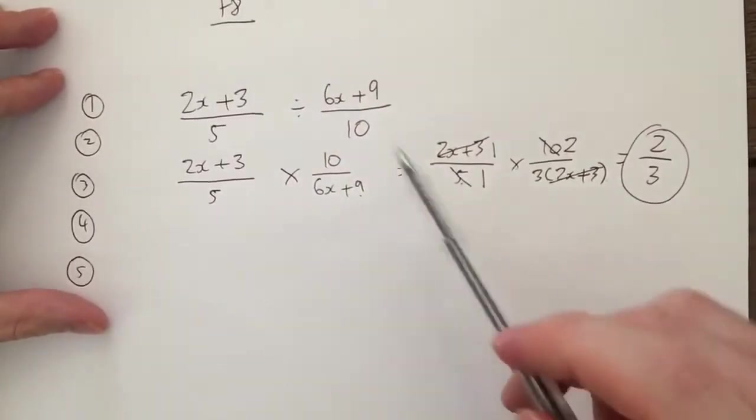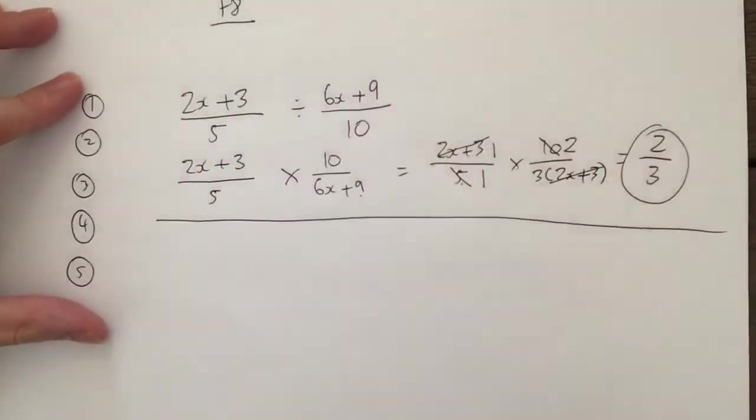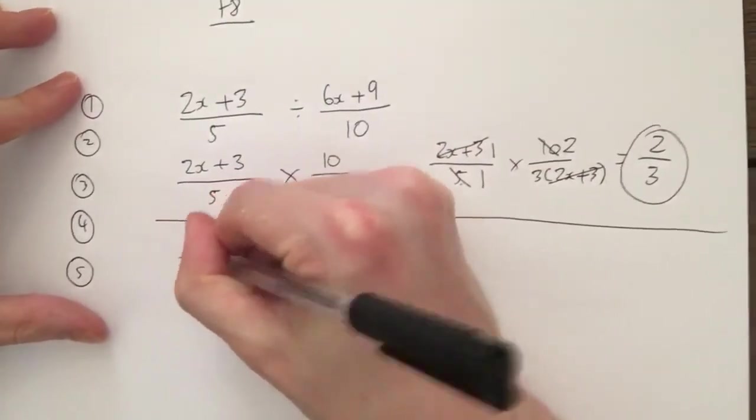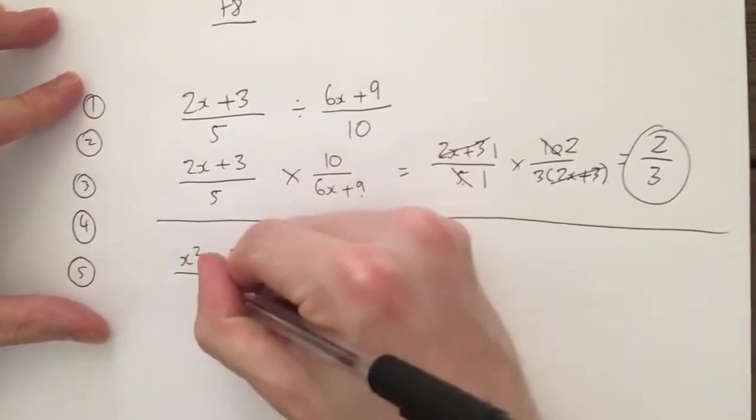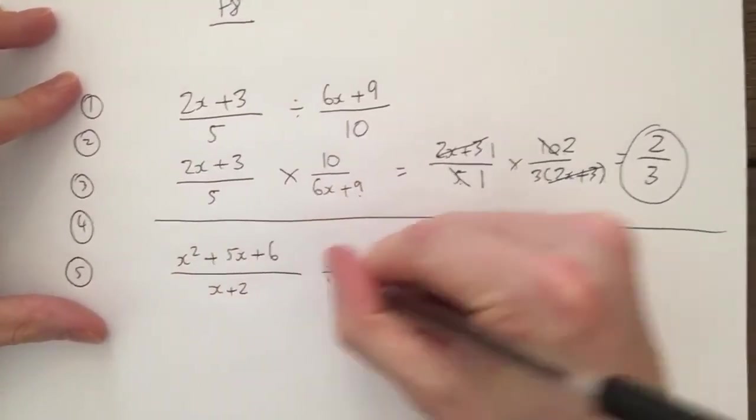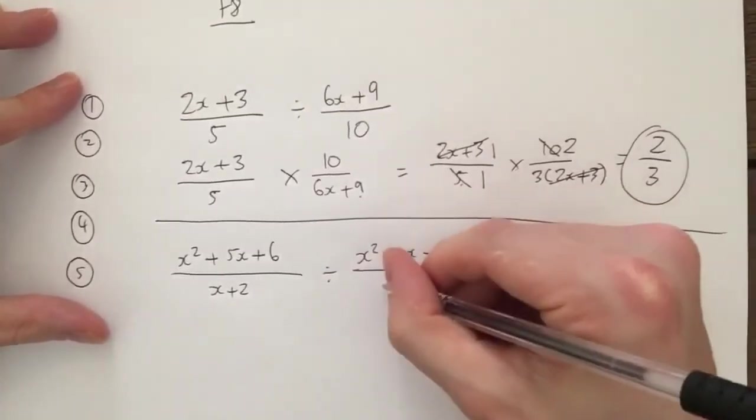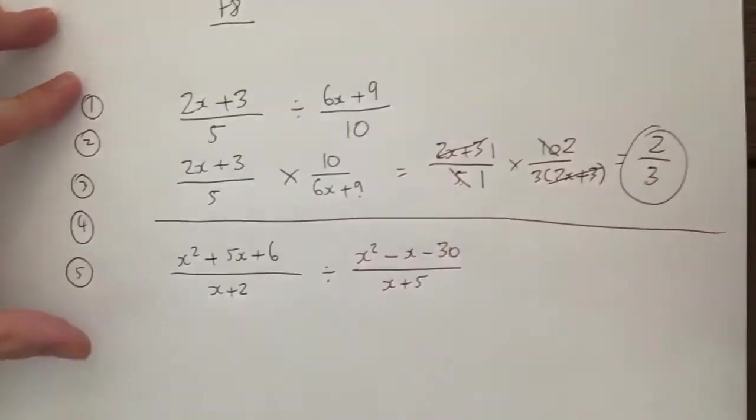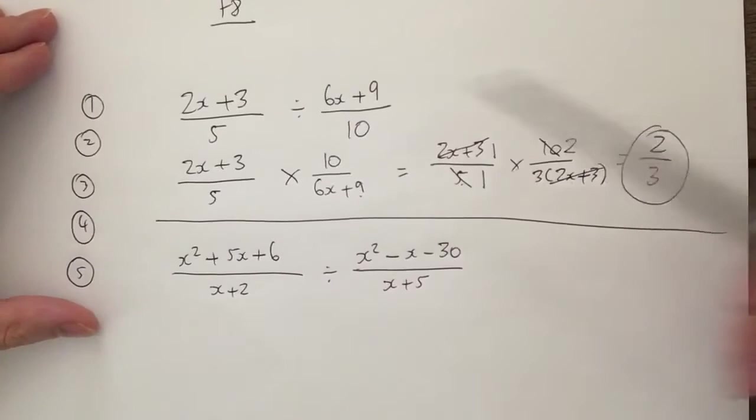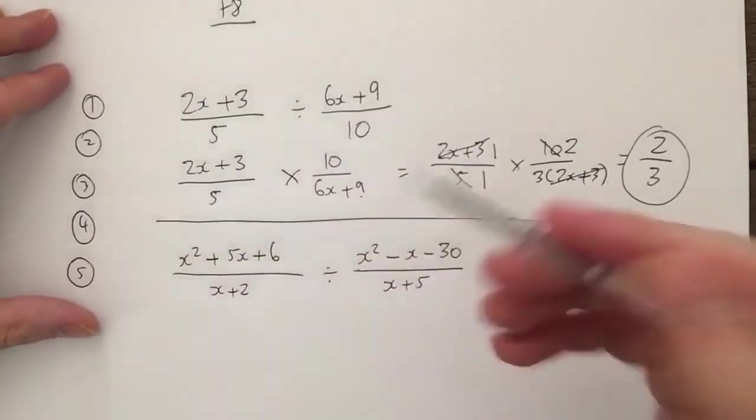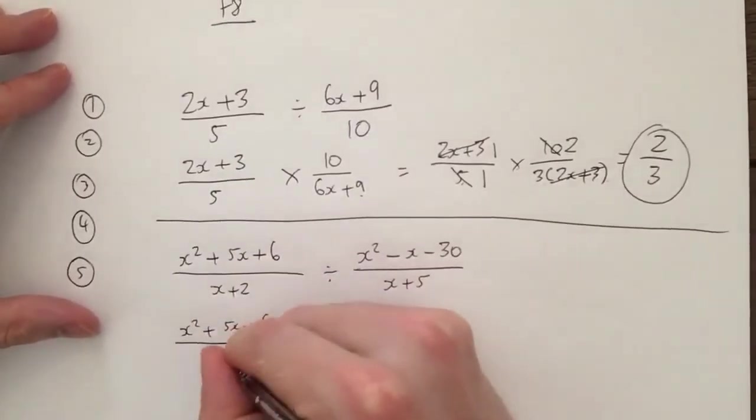Okay, last example. x squared plus 5x plus 6 over x plus 2, divided by x squared minus x minus 30 over x plus 5. Okay, looks complicated. In the exam, worth probably three or four marks. It isn't. Step 1, divide, keep change flip. x squared plus 5x plus 6 over x plus 2, and I times that, and I flip these two: x plus 5 over x squared minus x minus 30.